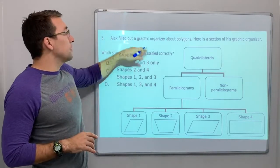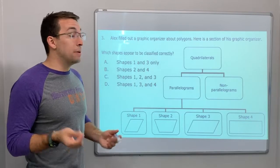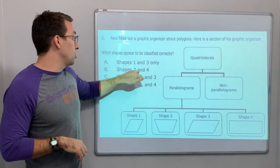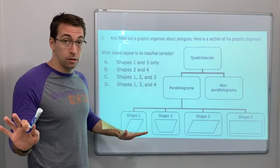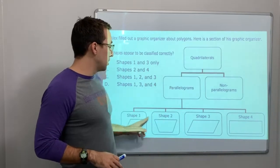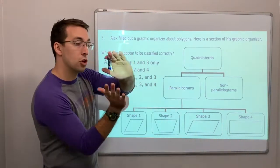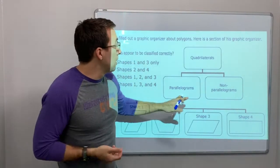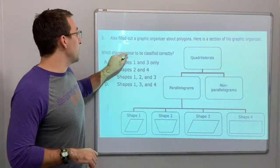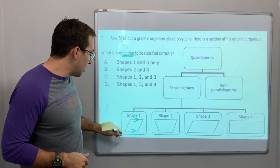Alex filled out a graphic organizer about polygons. Which shapes appear to be classified correctly? The options are: shapes one and three only, shapes two and four, one two three, or one three four. Everything on here is quadrilaterals — quadrilaterals means four sides. Parallelograms mean all opposite sides are parallel. We're only dealing with parallelograms here.